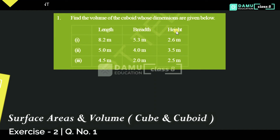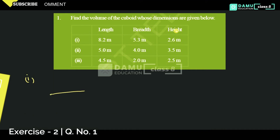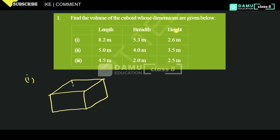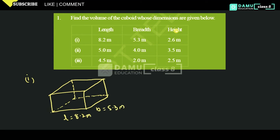So let's take the first one. Length will be 8.2 meters, breadth will be 5.3 meters, and height will be 2.6 meters. You can draw the cuboid like this. So the question is: find the volume.